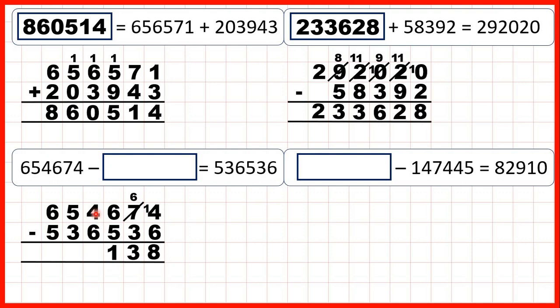We can't do 4 minus 6, so go to the left, 1 less 1 in front, 14 minus 6 is 8, 4 minus 3 is 1, and 6 minus 5 is 1. So our missing number is 118,138.